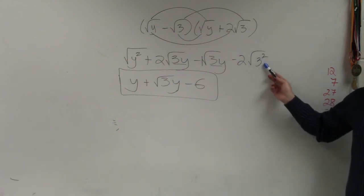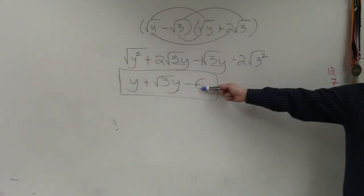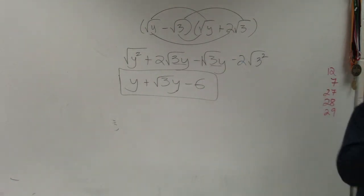What's the square root of 3 squared? 3. 3 times negative 2 is negative 6. Yep.